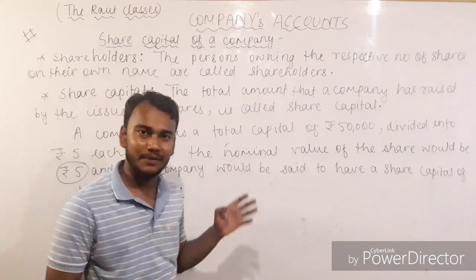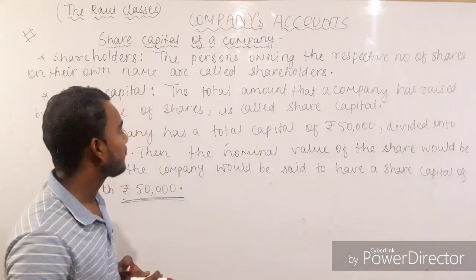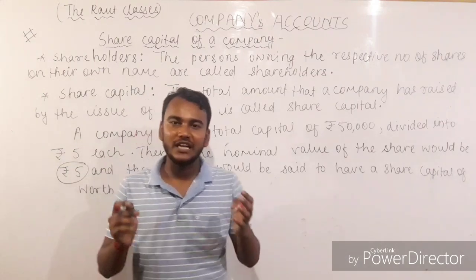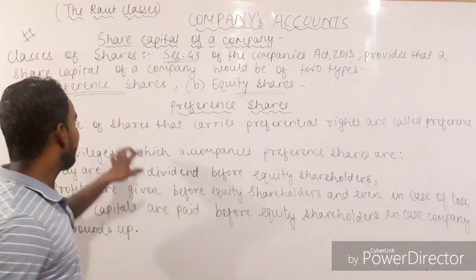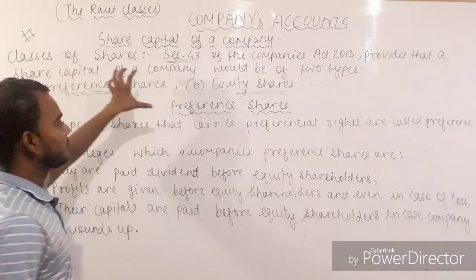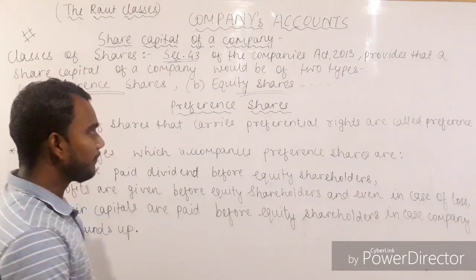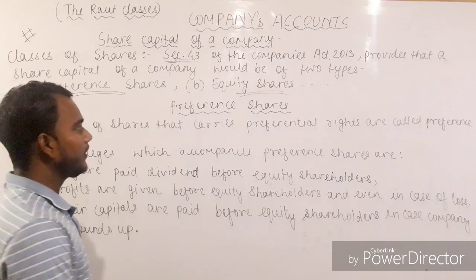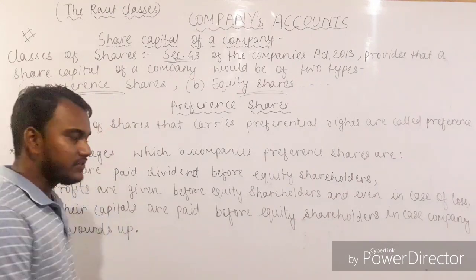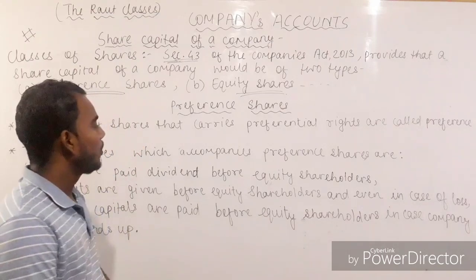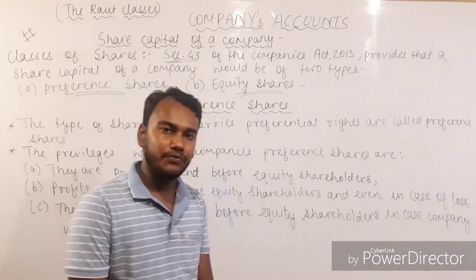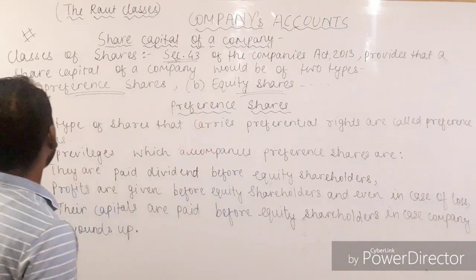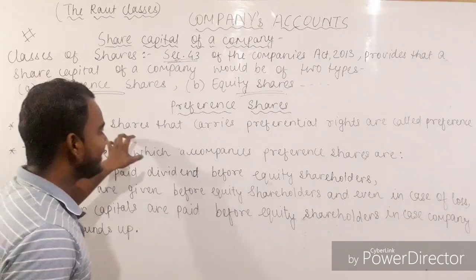I think the concept of shareholders and share capital of the company is now clear. Moving forth, we will be discussing about the types of shares. According to Section 43 of the Companies Act 2013, the share capital of a company would be of two types: preference shares and equity shares. First, I will be discussing about preference shares.